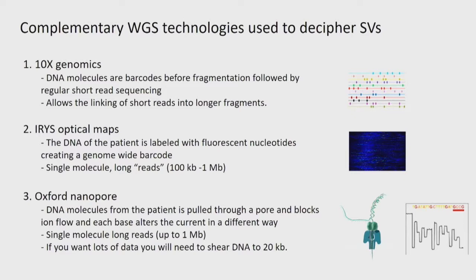We also recently sent samples for Oxford Nanopore sequencing, which is true single-molecule sequencing where you get a current change depending on what base you have. Here you can get single molecules up to about one megabase, but they told us you have to shear your DNA to about 20 KB fragments if you want a lot of output from your experiment. I'll give you a few examples of how we've been using these technologies to understand more about our cases and the underlying biology.